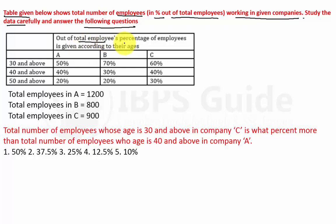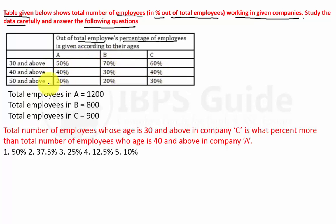Out of the total employees, the percentage of employees in a given company is shown according to their age groups. For age 30 and above: Company A is 50%, Company B is 70%, Company C is 60%. For 40 and above: Company A is 40%, Company B is 30%, Company C is 40%. For 50 and above: Company A is 20%, Company B is 20%, Company C is 30%. The total number of employees in Company B is 800 and in Company C is 900.